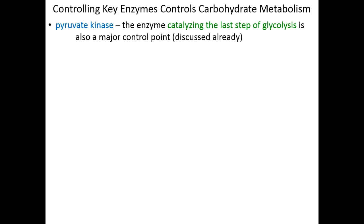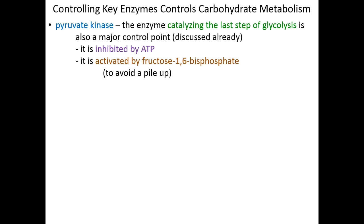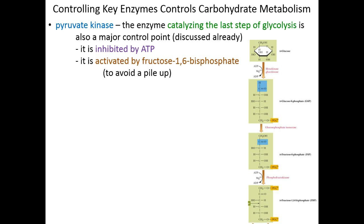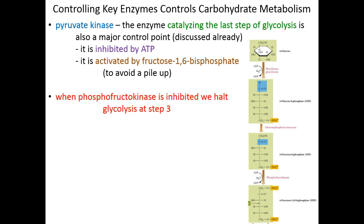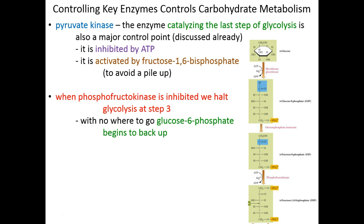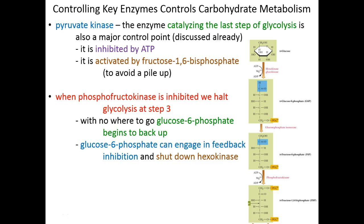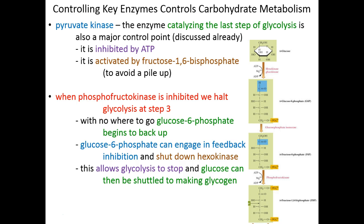Another key cellular control point is step 10 of glycolysis: pyruvate kinase. Pyruvate kinase is not only responsible for regulating glycolysis — it's inhibited by ATP and activated by fructose 1,6-bisphosphate, which keeps glycolysis from backing up. When PFK is inhibited, glycolysis stops at step 3, causing a backup at steps 2 and 1. As glucose 6-phosphate levels climb, hexokinase is inhibited, and when hexokinase shuts down, glycolysis shuts down entirely.